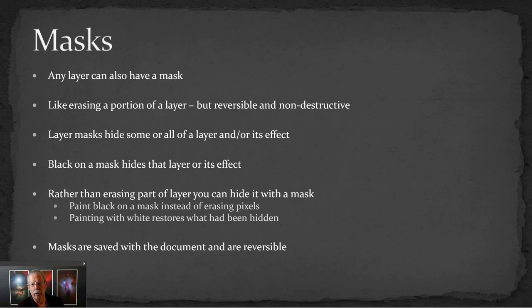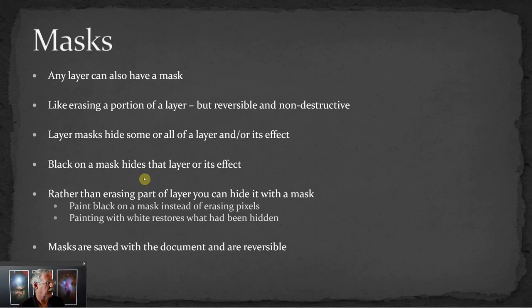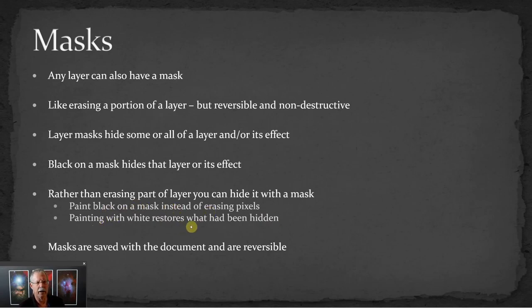Every layer, whether it's a pixel-bearing layer or an adjustment layer, can have a mask. A mask is like hiding or erasing a portion of a layer — it will hide some or all of a layer or the effect of an adjustment layer. Black on a mask hides that layer or that portion of the layer. White reveals that layer. The power of that is if you paint on a mask with black paint, it would be similar to erasing pixels — but erasing is destructive, hiding with a mask is non-destructive. Painting with white restores what had been hidden. If I paint with black to hide something, I can come back and paint with white and get back to where I started. If I erased, I can't un-erase. Masks are saved with the documents, so they're reversible.